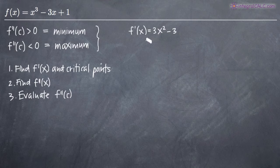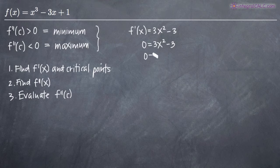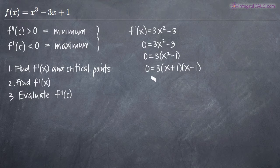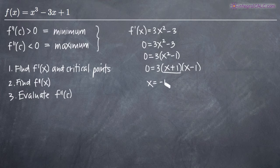To find critical points, we set the first derivative equal to zero and solve for x: zero equals 3x squared minus 3. We factor out a 3 to get 3 times x squared minus 1, and then factor completely to get 3 times (x plus 1) times (x minus 1). Setting each factor equal to zero gives us critical points x equals negative 1 and x equals positive 1.